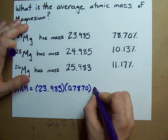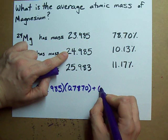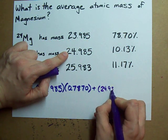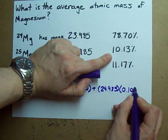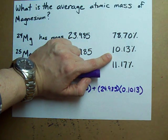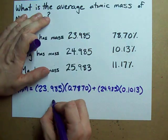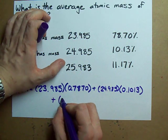Then you just add on one of the other masses, 24.985 times its isotopic abundance, 10.13%. And you have to add the third isotope.